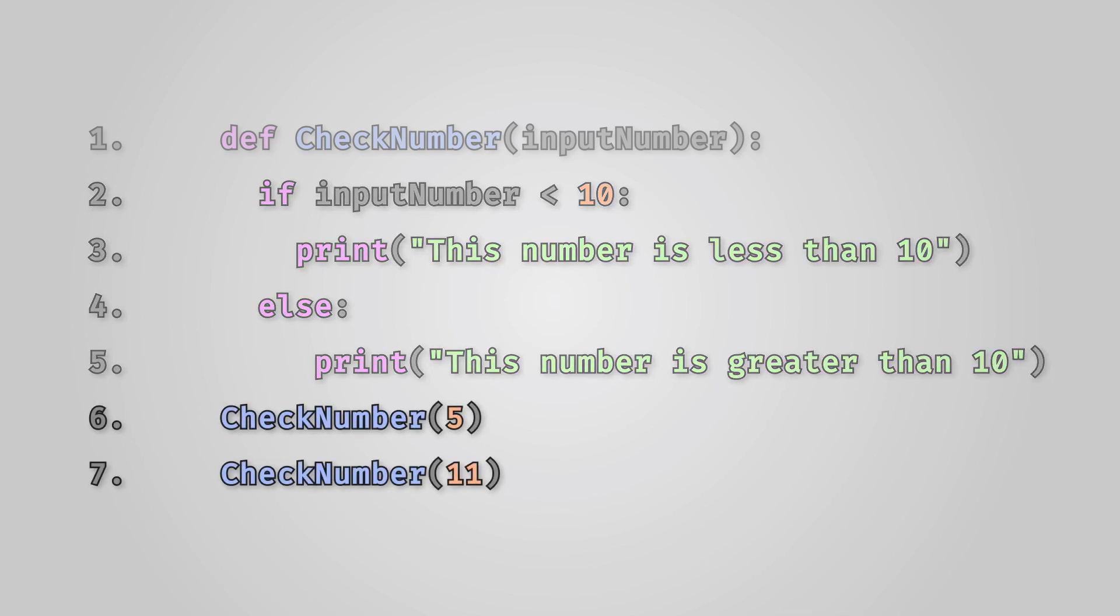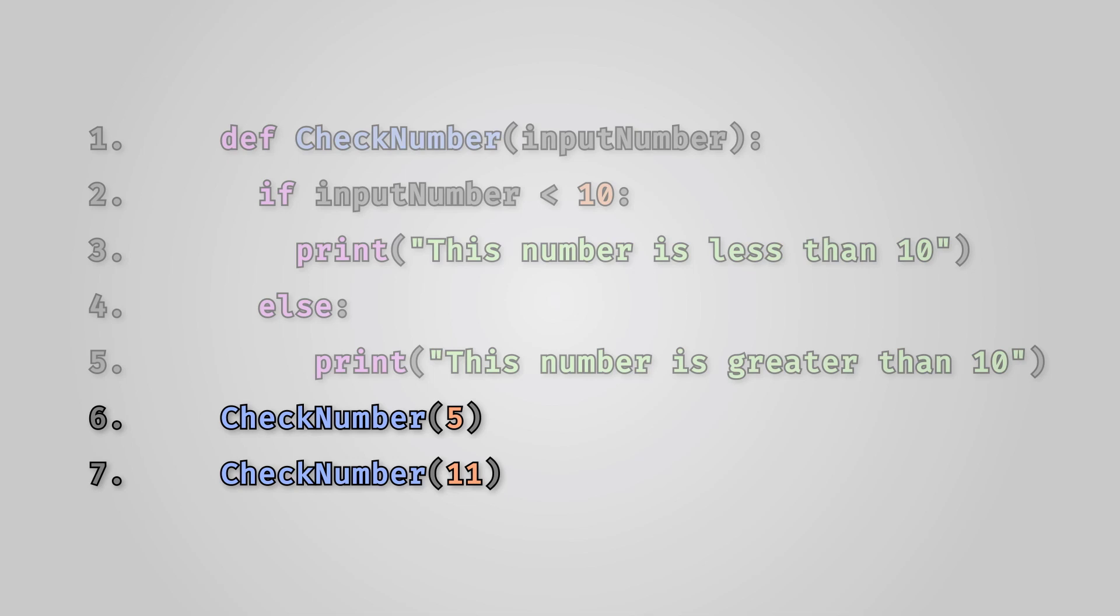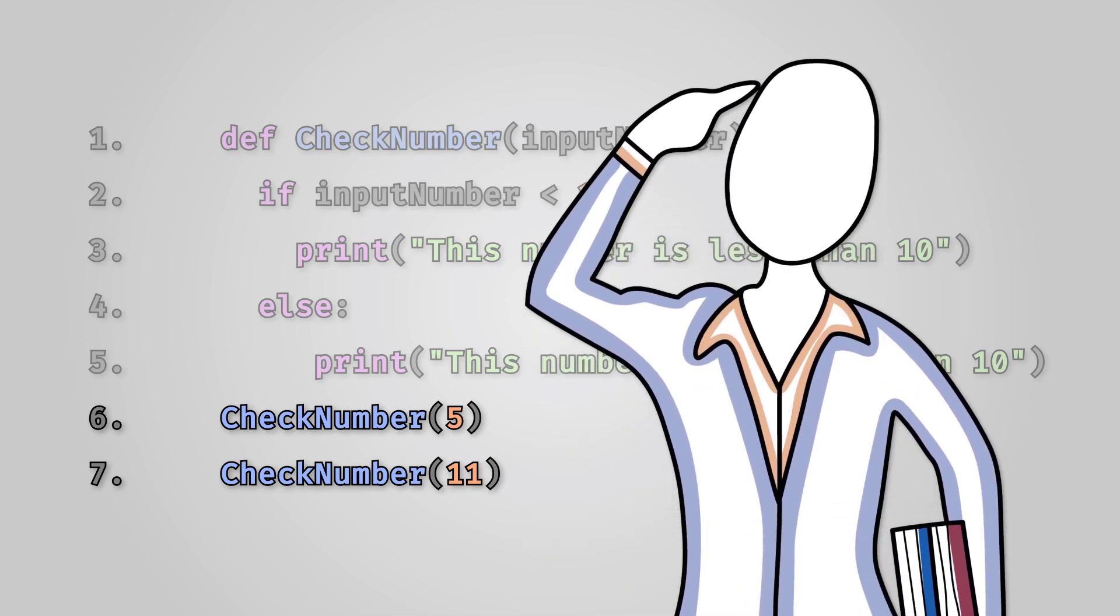Finally we've called our procedure twice with two different values. Firstly we've passed the number 5 into our procedure and then we call it again passing the number 11. Here we've used two integer parameters. However, parameters can be any of the data types that we have learnt about in this course.